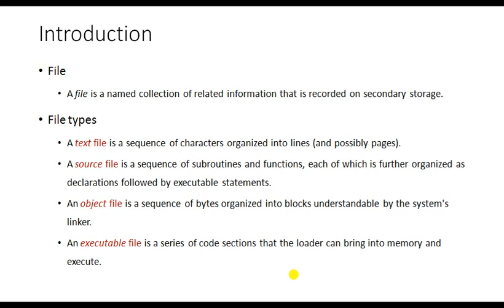Executable files also cannot be opened to view their code — only the operating system understands the code inside. Taking a C program as an example, we can classify what is a text file, source file, object file, and executable file. If you write a C program and name it demo.c, save it using any editor to a storage location like C drive or D drive, that file stored in secondary storage is a source file.